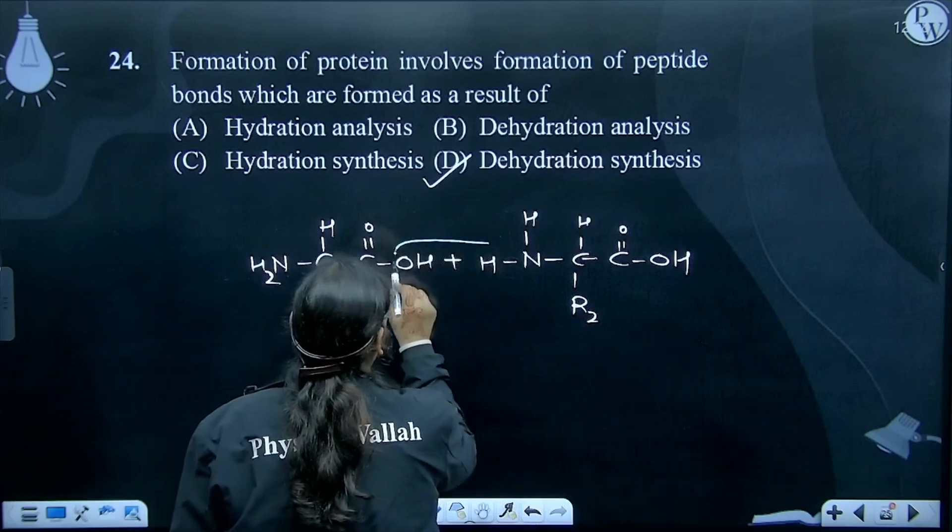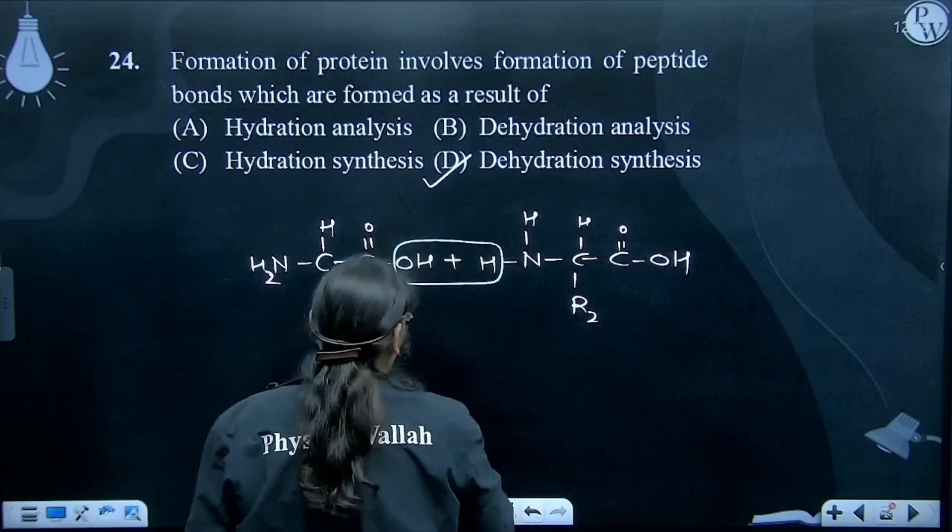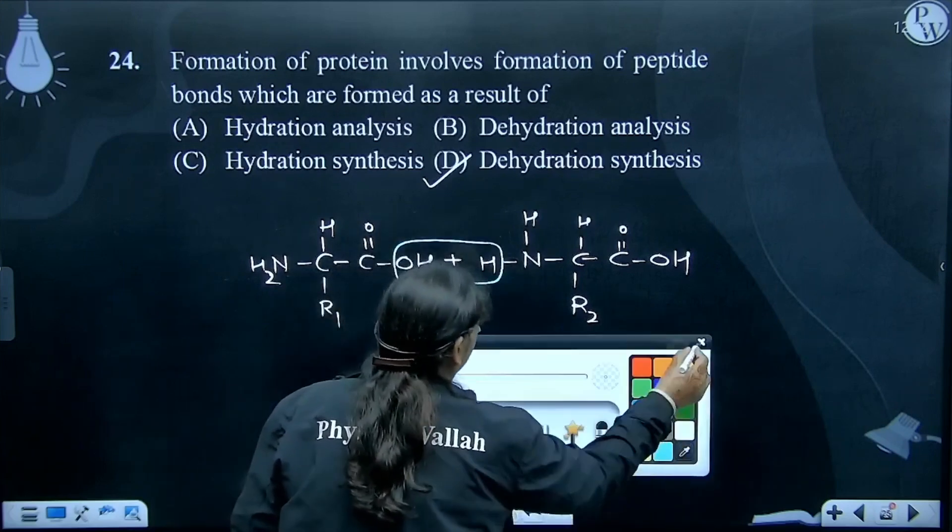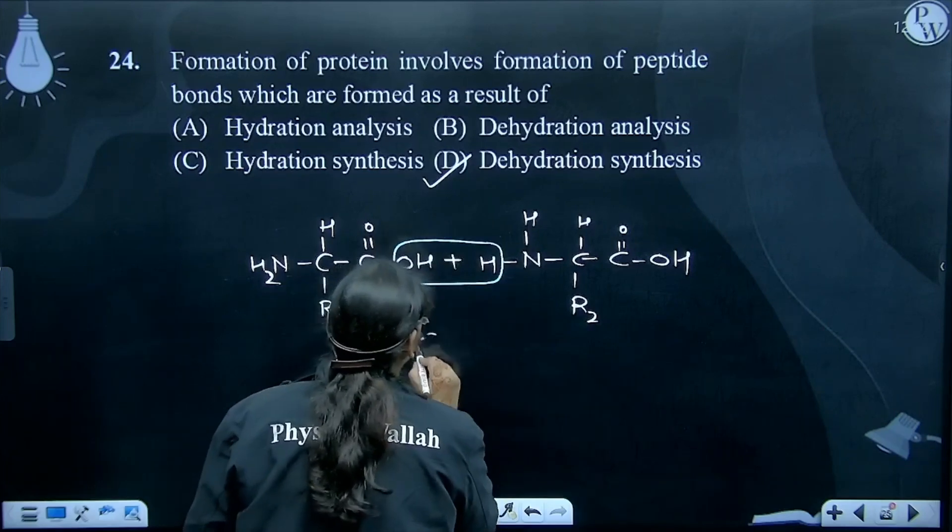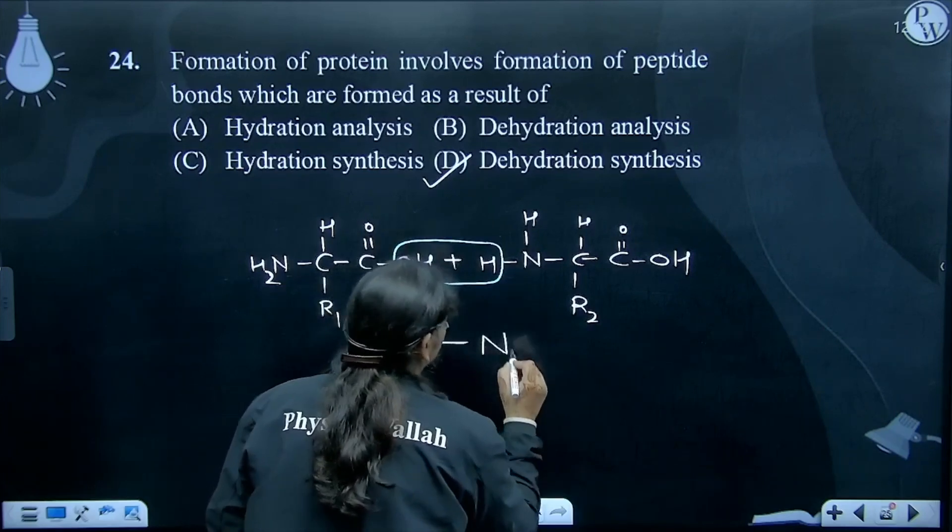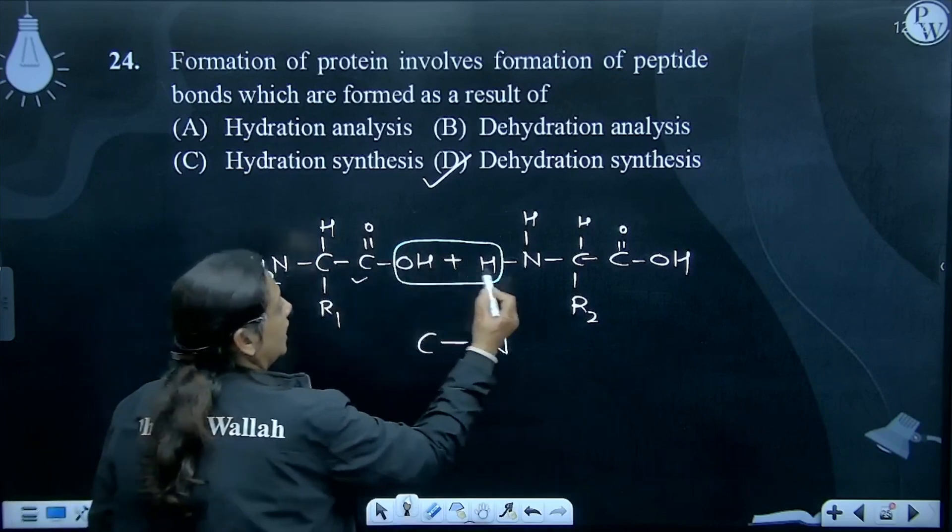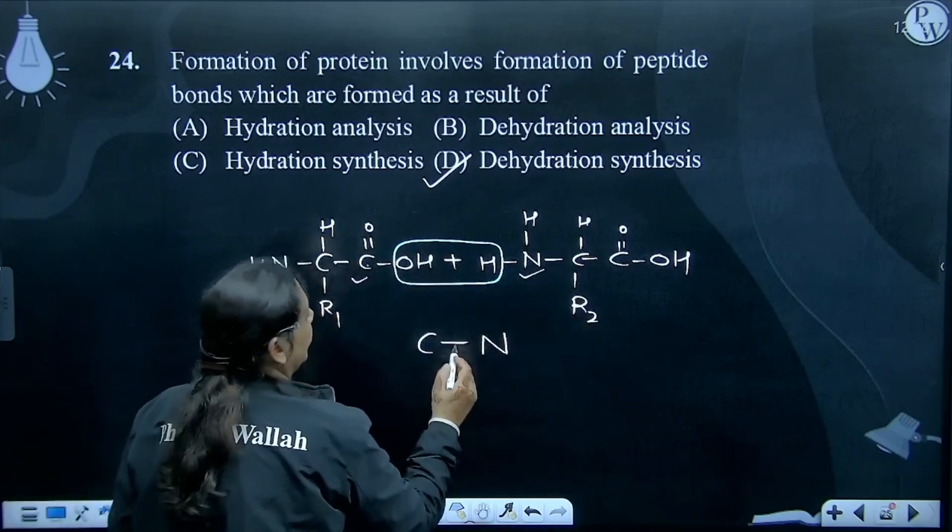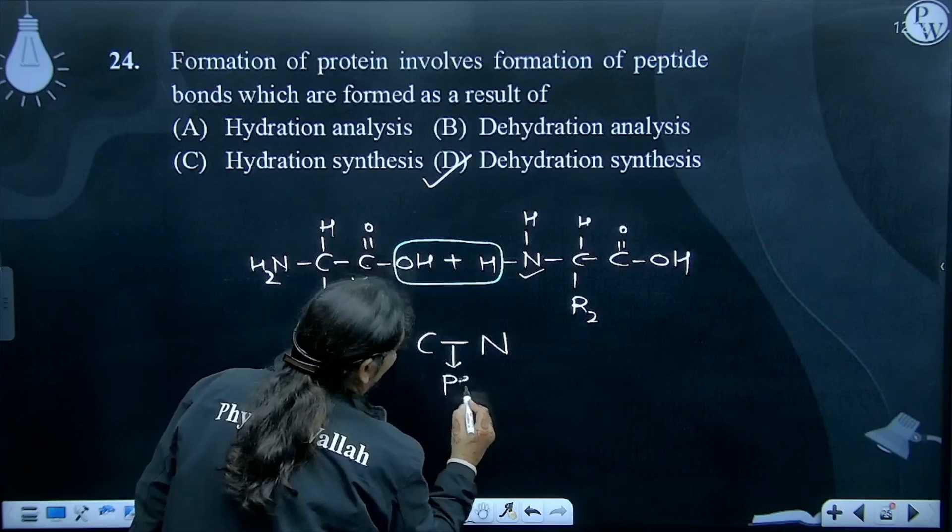So hume kya nikalna padega - water nikalna padega. Aur water nikalne se kya hoga? Yaha par is C or N ke beech mein kya ban jayega - ek bond ban jayega. Aur isi ko bolte hai, C or N ke beech mein bond ban jayega, usko bolte hai peptide bond.